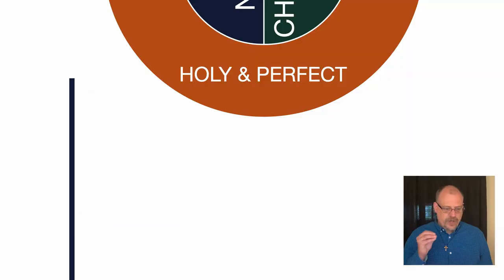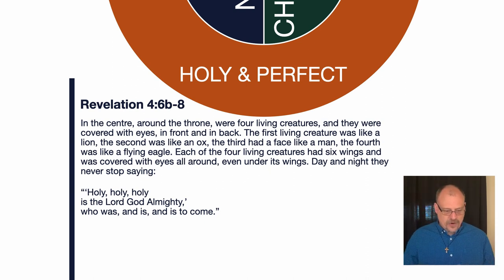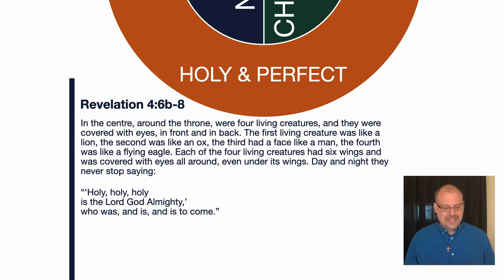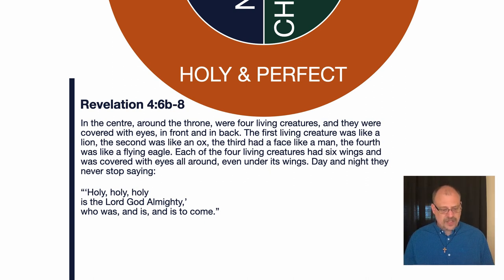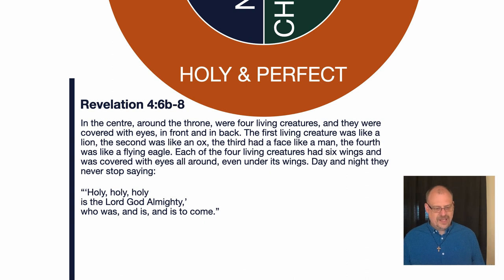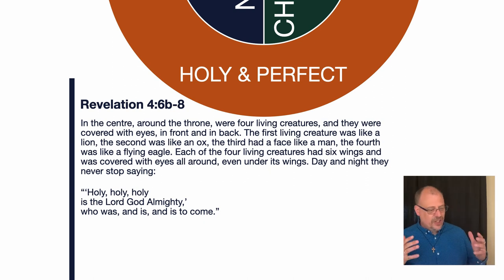Revelation chapter 4, with John receiving his vision, we read these words: "In the center, around the throne, were four living creatures, and they were covered with eyes in front and in back. The first living creature was like a lion, the second like an ox, the third had a face like a man, the fourth was like a flying eagle. Each of the four living creatures had six wings and was covered with eyes all around, even under its wings. Day and night they never stop saying: 'Holy, holy, holy is the Lord God Almighty, who was and is and is to come.'"